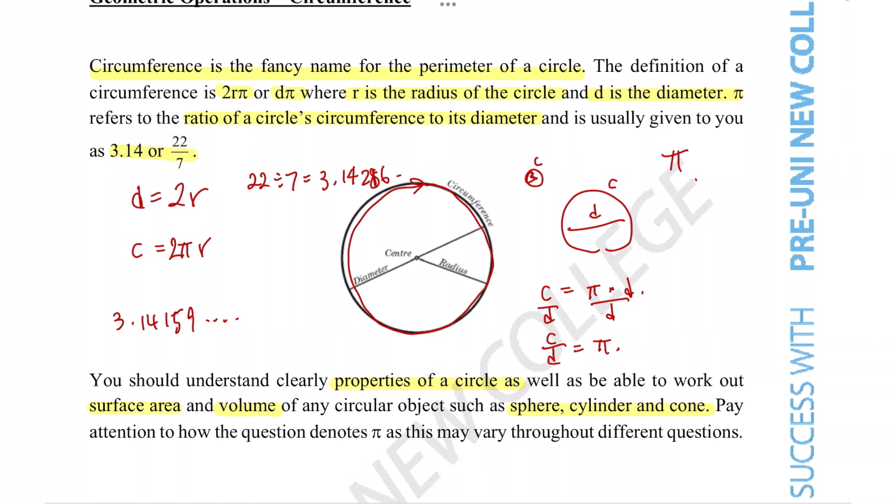And it's very important that you follow the correct definition of pi in these questions because depending on the rounding effect you can actually get a very different answer to what the question wants you. So you need to use the specific amount of decimal points or the fraction needed for that question.